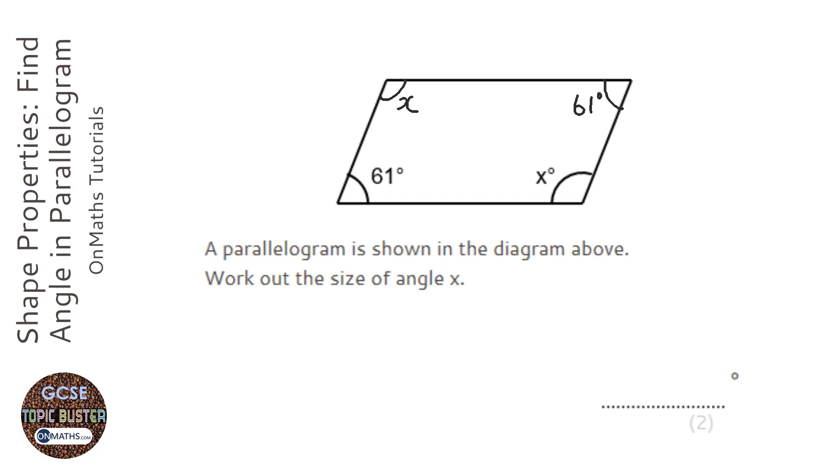And also it's a quadrilateral, so they add up to 360. So if we go around and add up all the angles, x plus 61 plus x plus 61, it's going to equal 360.